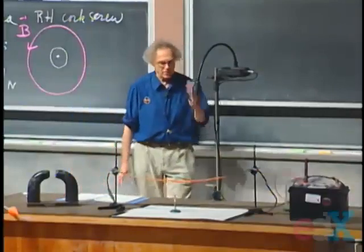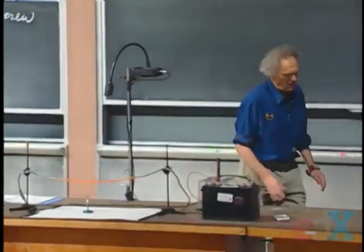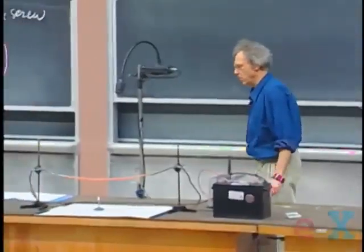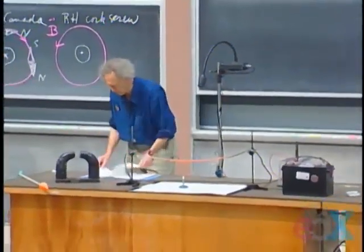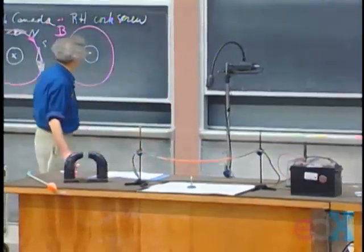Action equals minus reaction. And that means that if a wire that runs a current has a force on a magnet, then of course the magnet must also exert a force on the wire. And I'm going to demonstrate that to you too.